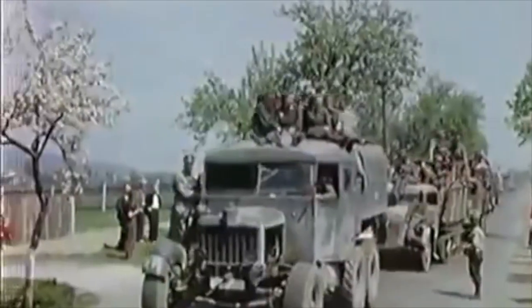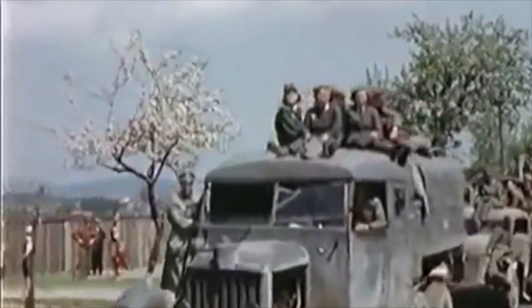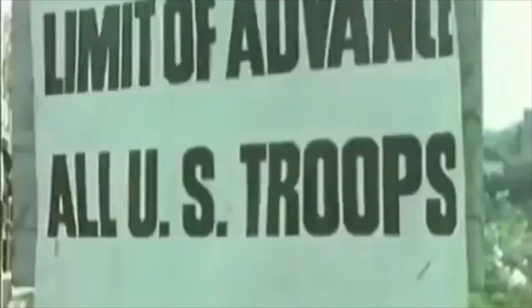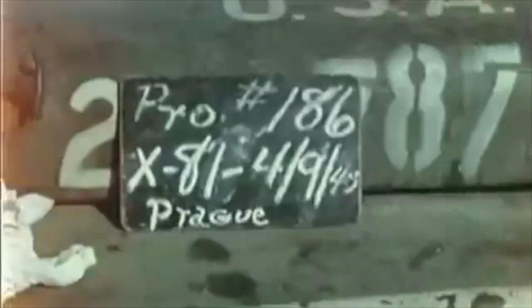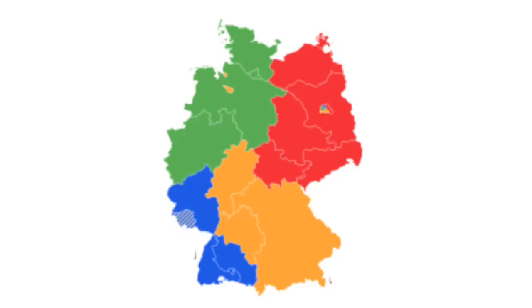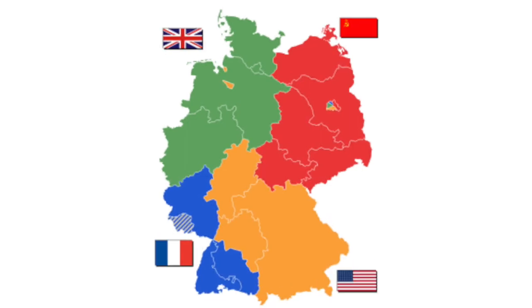In order to understand the events that led up to the construction of the wall, one must look back to 1945, the year that Germany announced its unconditional surrender, thus bringing World War II to an end. After the war, Germany was split into four temporary occupational zones. The western part was split between England, France, and the United States, and eastern Germany was put under Soviet control.